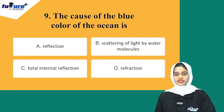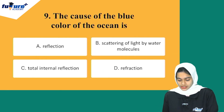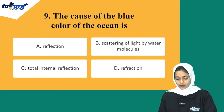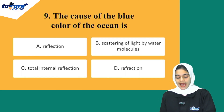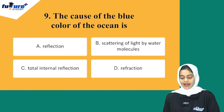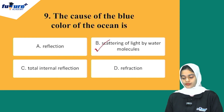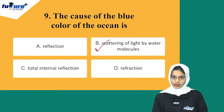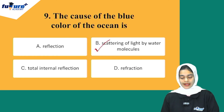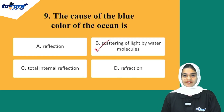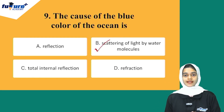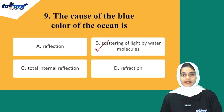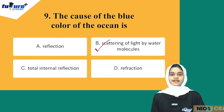The cause of the blue color of the ocean is — Option A: reflection, Option B: scattering of light by water molecules, Option C: total internal reflection, Option D: refraction. The answer is Option B, scattering of light by water molecules — similar to why the sky appears blue and sunsets appear red.